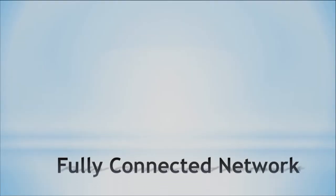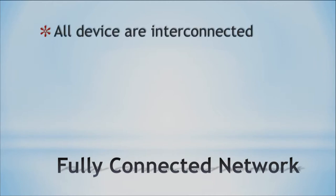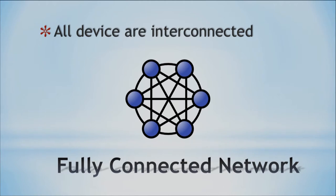Next we have the fully connected network. You might think of this as a little overwhelming, but all devices are interconnected — every device is connected to every other device. This topology kind of looks like a ring, but then everything gets interconnected. That takes a lot of cabling, and just imagine if you added one more device — how much more cabling that would require. This is a complex network structure because it requires a lot of cabling and setup.